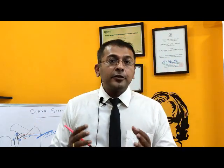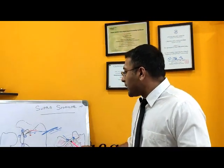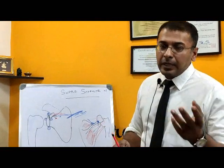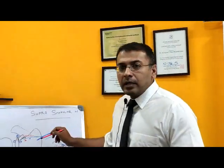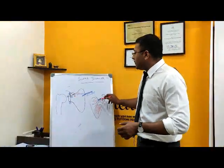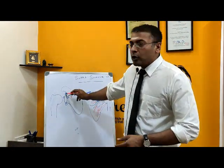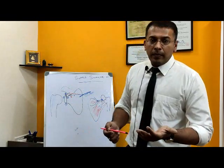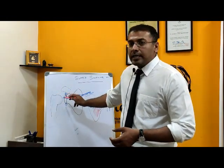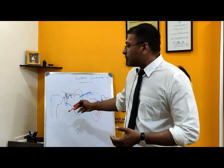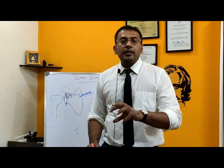For surgical management, if there is compression at the suprascapular notch, we can release it with an arthroscopic suprascapular nerve release — placing a camera in the shoulder, locating the ligament, cutting it open, and freeing the nerve. If the compression is due to a cyst, this is treated by arthroscopic cyst decompression and nerve release. We release the cyst from inside or outside using different arthroscopic techniques, then visualize and confirm the nerve is completely free.